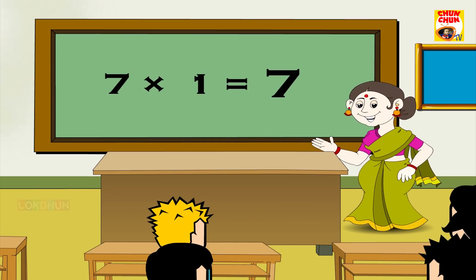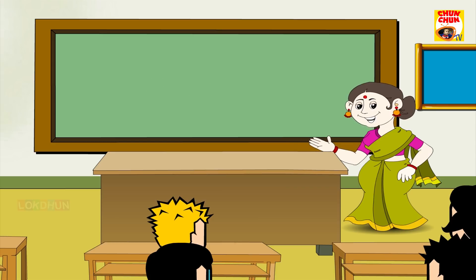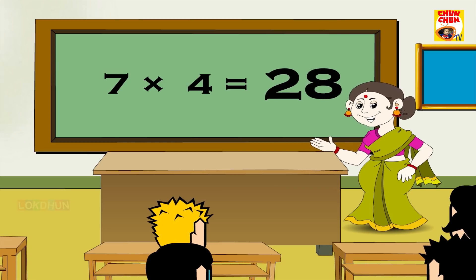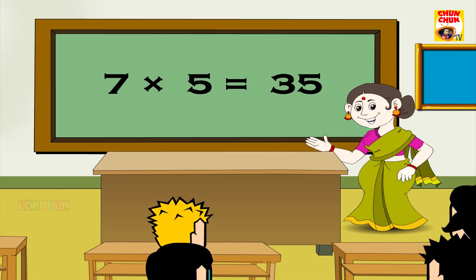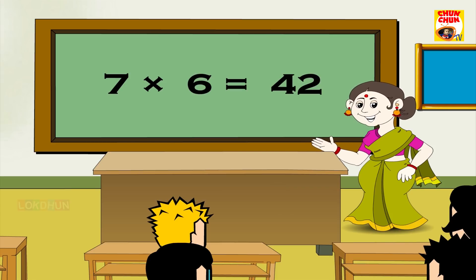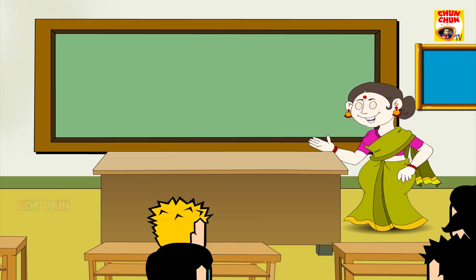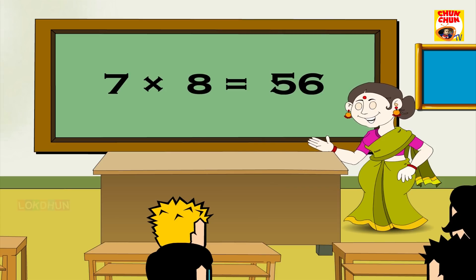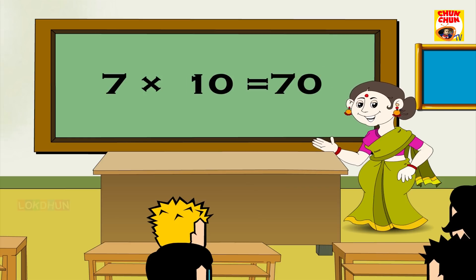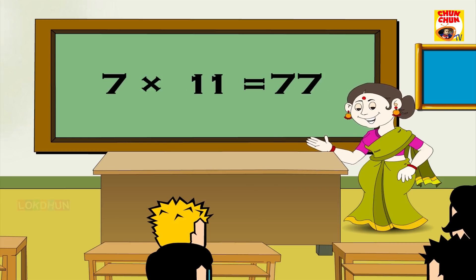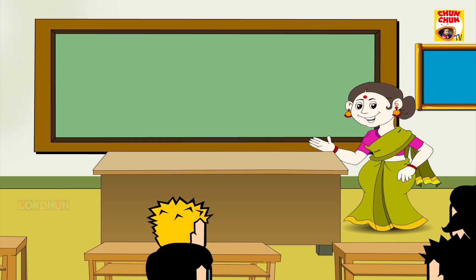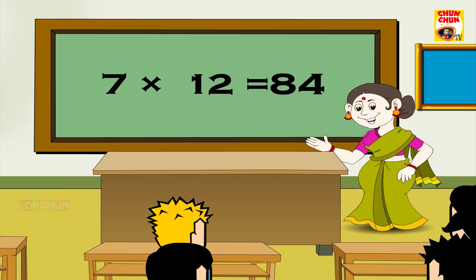7 1s are 7, 7 2s are 14, 7 3s are 21, 7 4s are 28, 7 5s are 35, 7 6s are 42, 7 7s are 49, 7 8s are 56, 7 9s are 63, 7 10s are 70, 7 11s are 77 and 7 12s are 84.